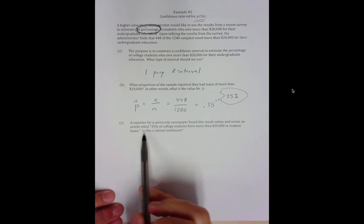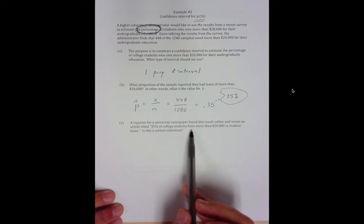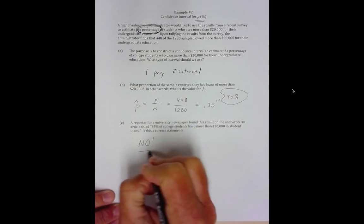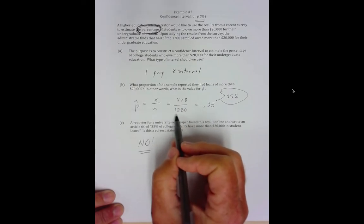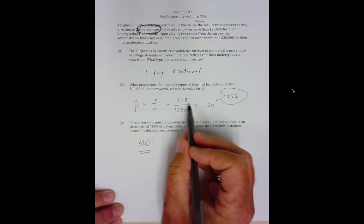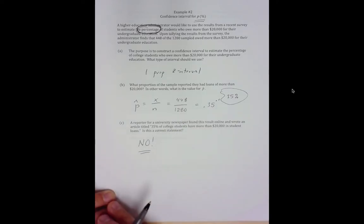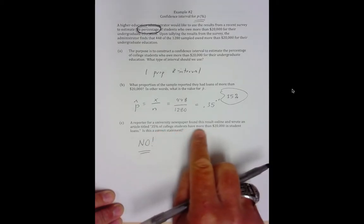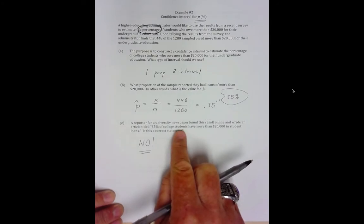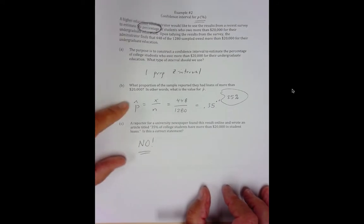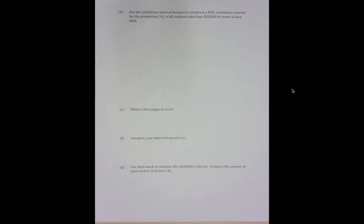I keep pointing this out because I see goofiness like this all the time. It's just wrong. A reporter from a university newspaper found their result online and wrote an article titled 35% of college students have more than $20,000 in student loan debt. Is this a correct statement? No. Absolutely not. 35% of the people in our sample, 1280 people, has student loan debt $20,000 or more. We're trying to estimate for all. And to do that you have to use a confidence interval. If we knew this we wouldn't even be conducting this study. We're conducting this study because we don't know the percentage of all students.